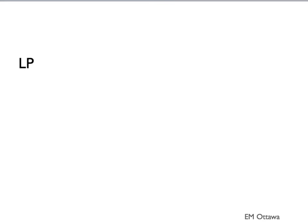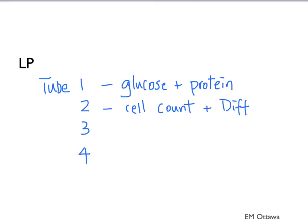The main diagnostic tool, however, is a lumbar puncture. A few tubes of CSF fluid should be obtained. One tube should be sent for glucose and protein. A tube is sent for cell count and differential. A tube for gram stain and culture. And a fourth tube can be sent for viral PCR if we're suspicious of a viral cause.